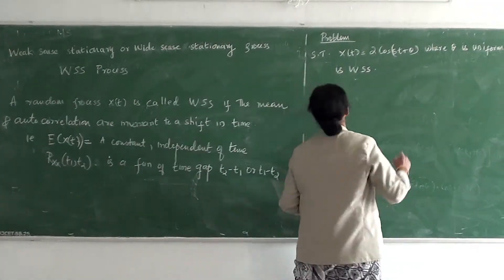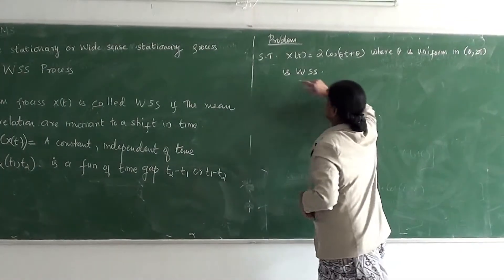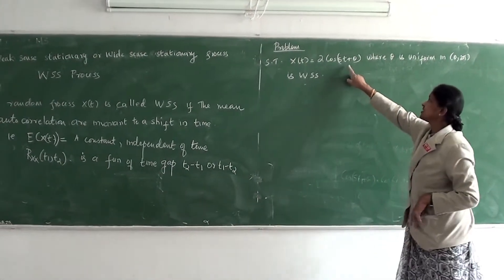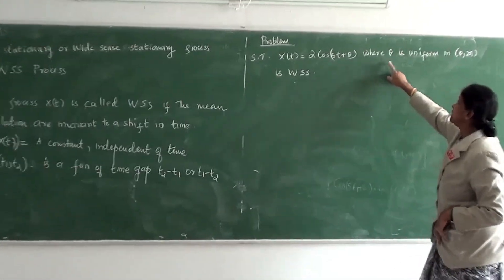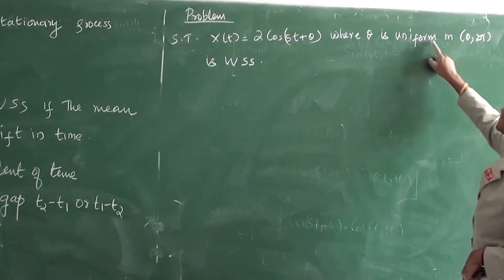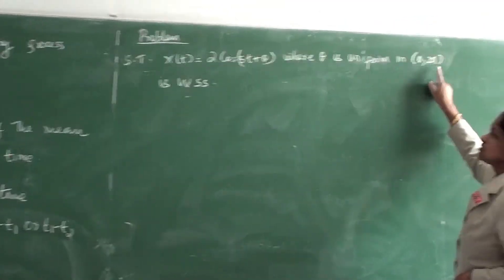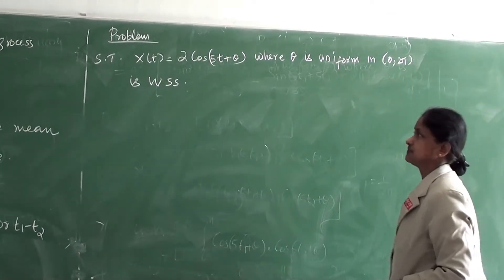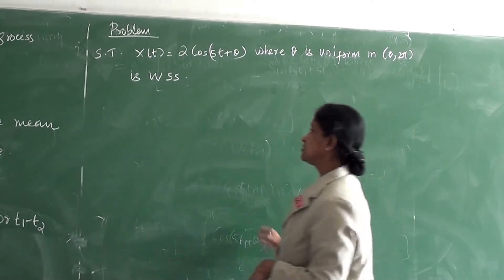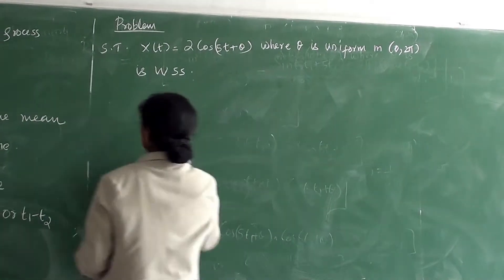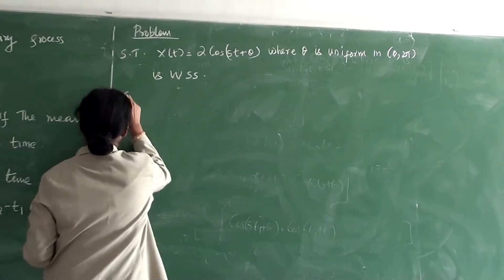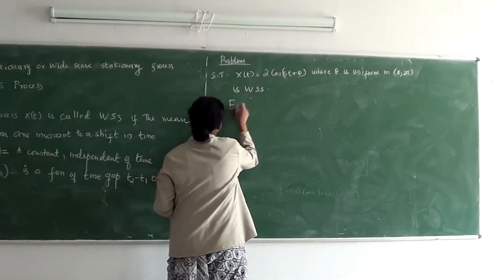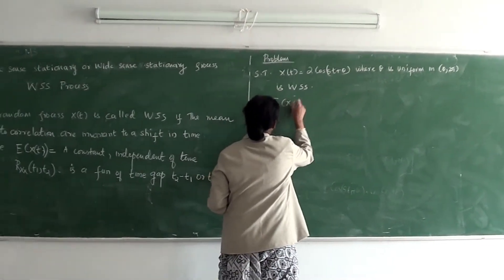Problem: Show that X(t) = 2cos(φt + θ), where θ is uniform from 0 to 2π, is a WSS process. To show this, first we find the expectation of X(t).